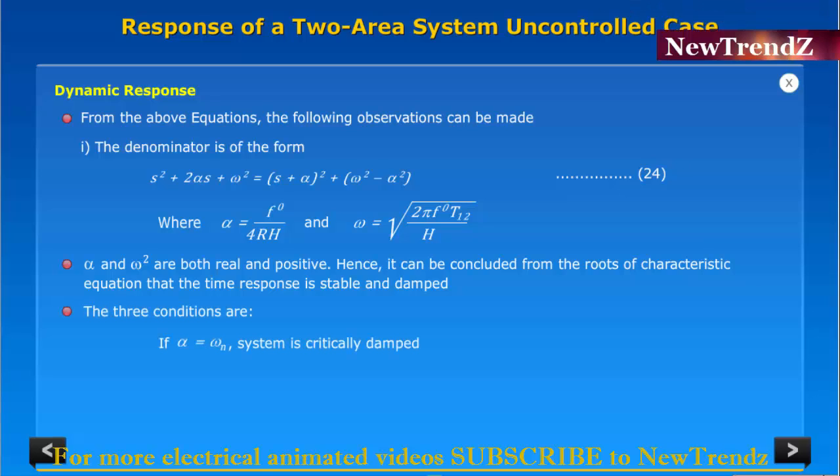The three conditions are: If alpha equal to ωn, system is critically damped. Alpha greater than ωn, system becomes overdamped. Alpha less than ωn, then S1,2 equal to minus alpha plus or minus j times square root of ωn squared minus alpha squared.